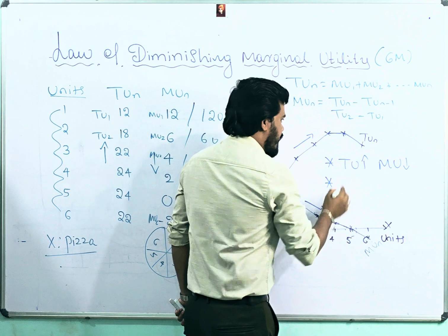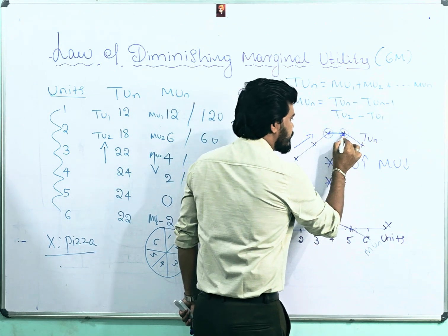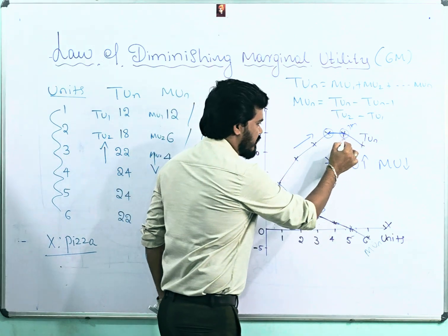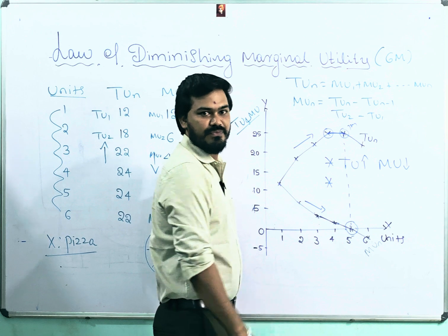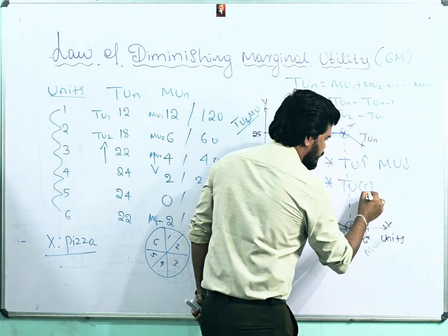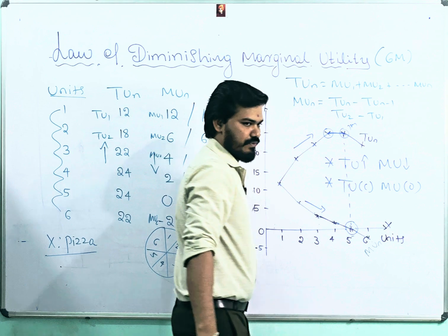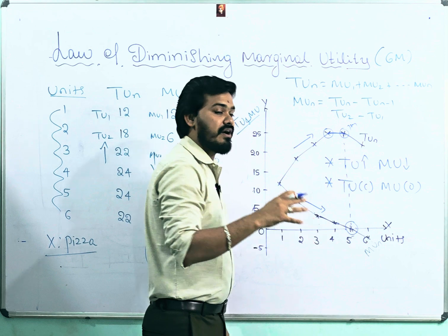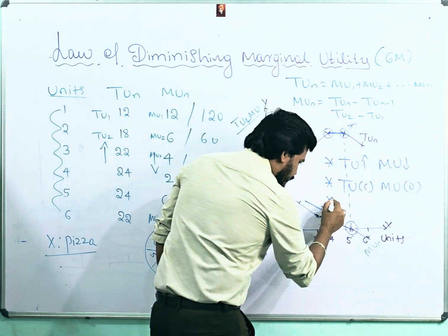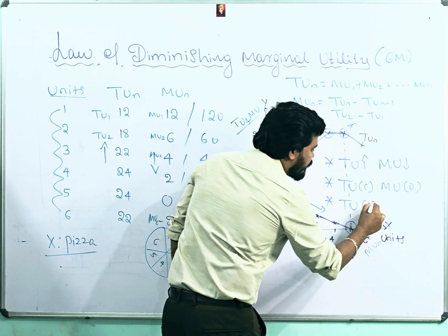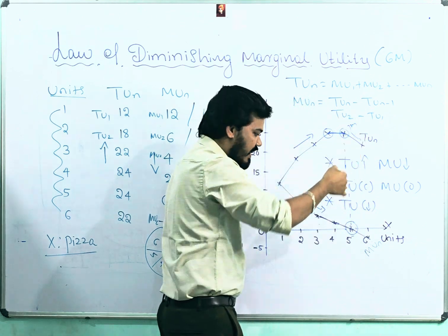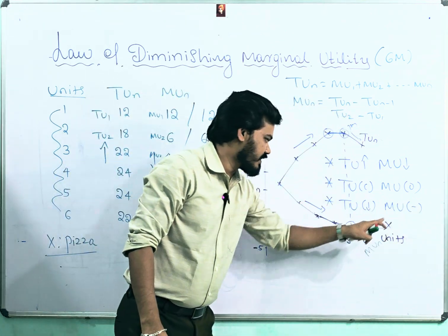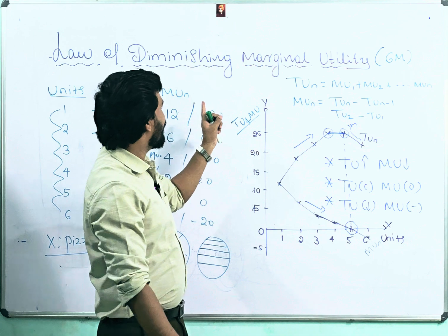Second: once total utility is constant, marginal utility becomes zero — this is the saturation point and is a one-mark question. If total utility is constant, marginal utility must equal zero. Third: if total utility starts to decline, marginal utility becomes negative. This is the essence of the Law of Diminishing Marginal Utility.